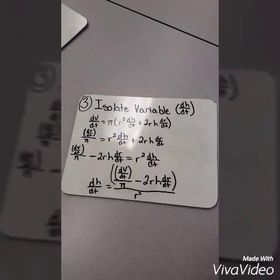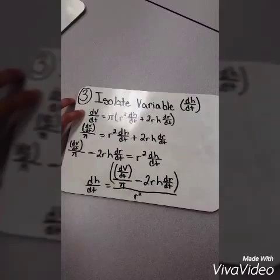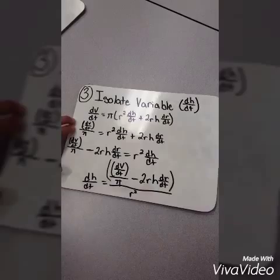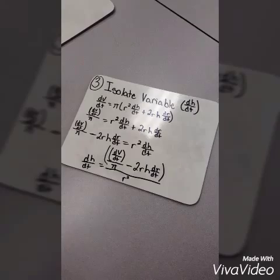All right, now we need to isolate the variable dh/dt. So this is our original equation. Now, we have to divide by π on both sides, and we end up with dV/dt over π equals r² dh/dt plus 2rh dr/dt.